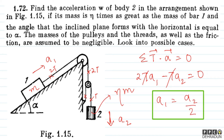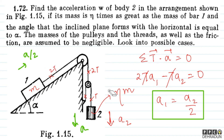So the constraint relation gives us: if body 2 has acceleration a, then body 1 has acceleration a by 2. This simplification is the key benefit of the constraint relation — we only have one unknown, a.